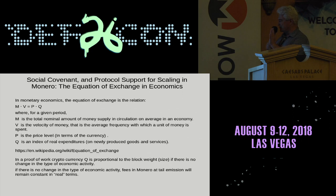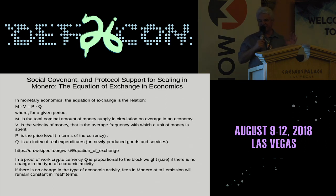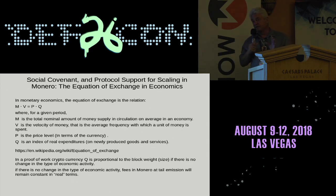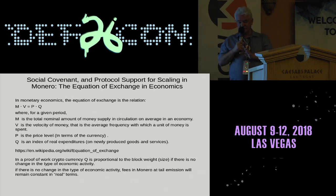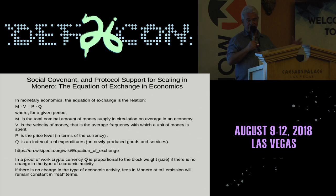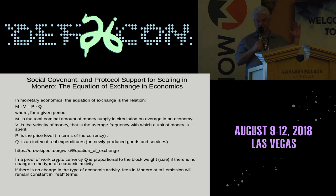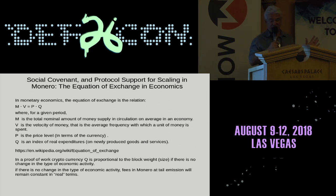In a proof-of-work cryptocurrency, if we assume the economy doesn't change — same types of goods and services but simply made bigger — then Q is actually proportional to the block weight size. This basically says that if we double the transactional activity, we have to effectively double the price of the currency. Because M doesn't change — it's set by protocol — and V hasn't changed because you haven't changed the nature of the economy.